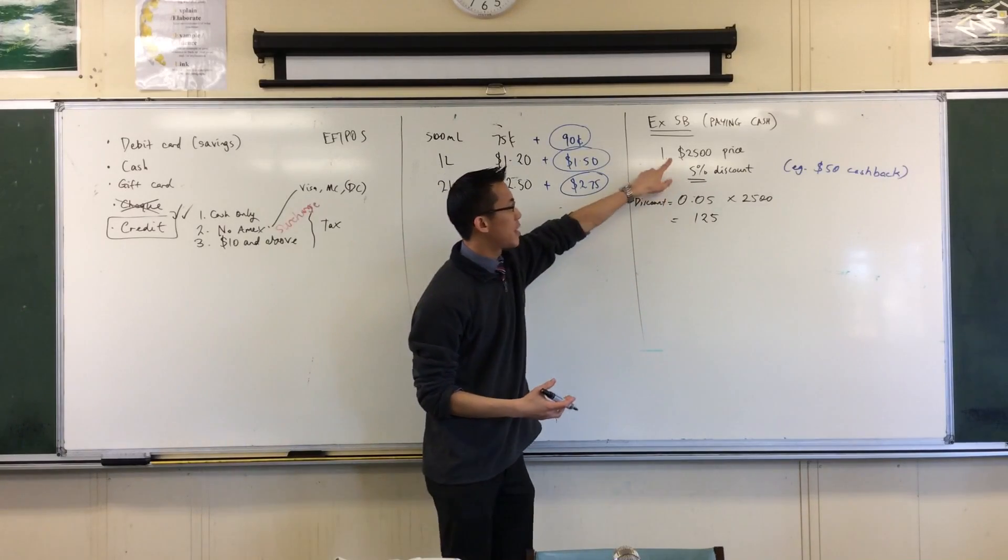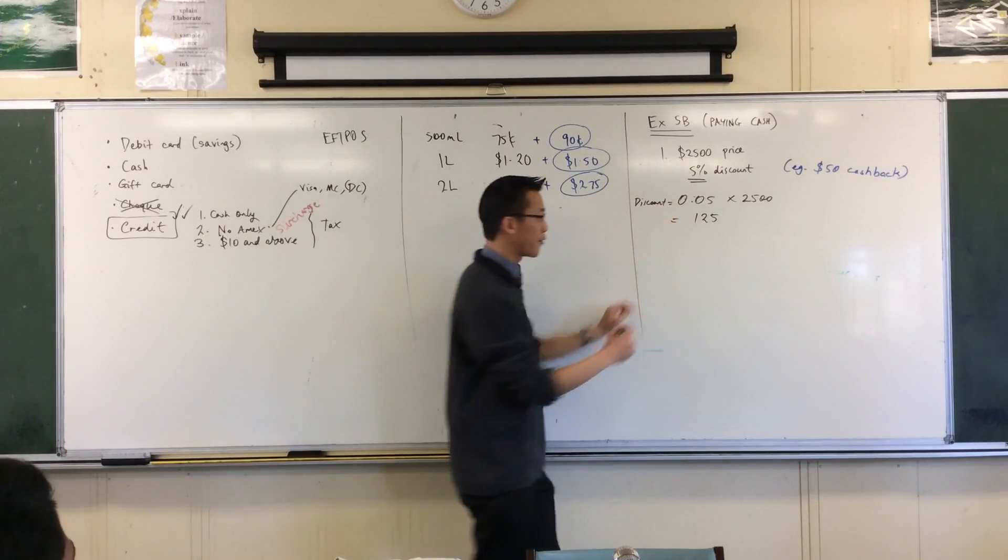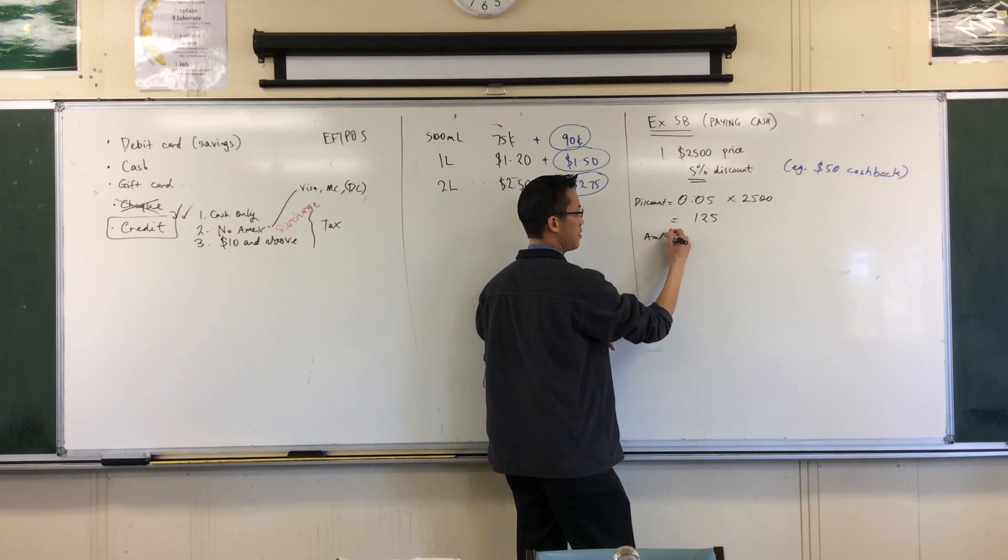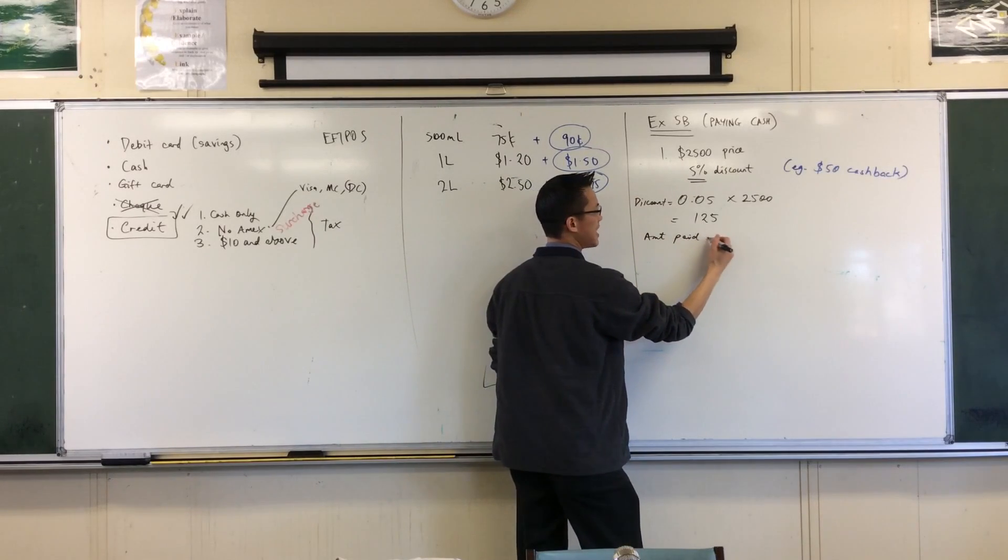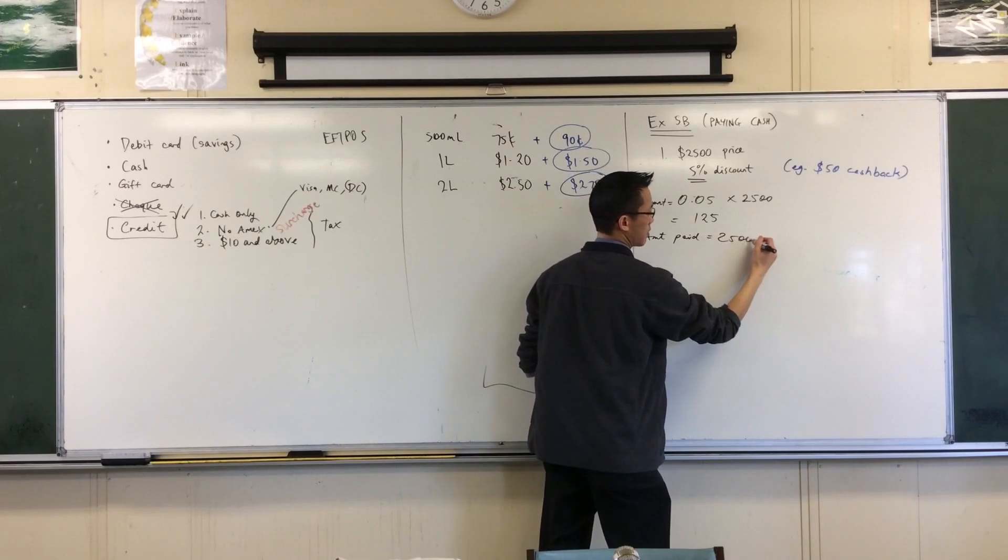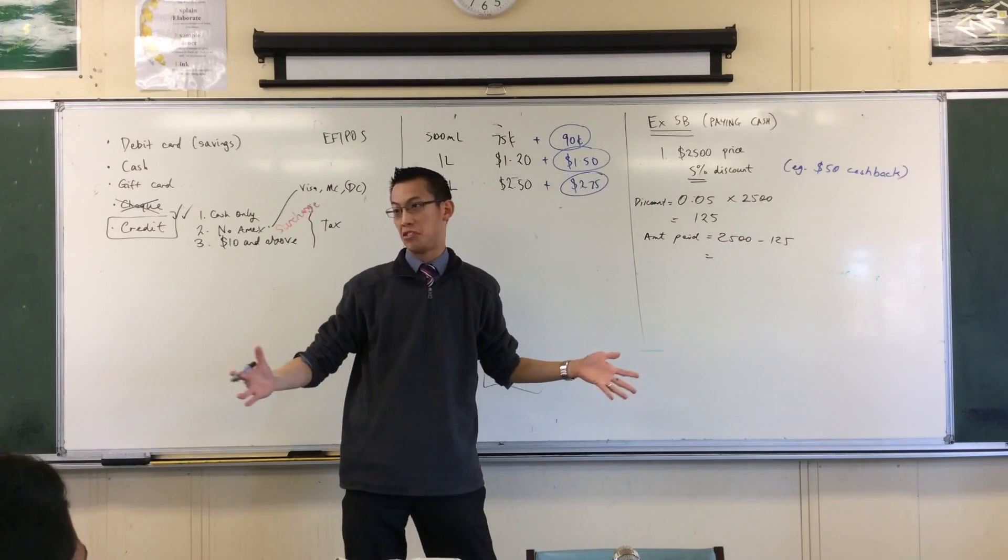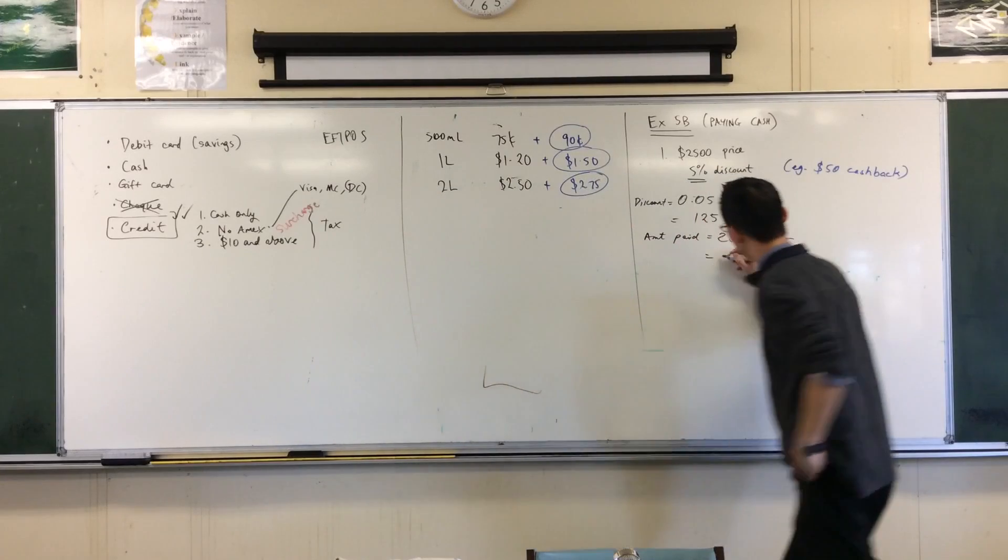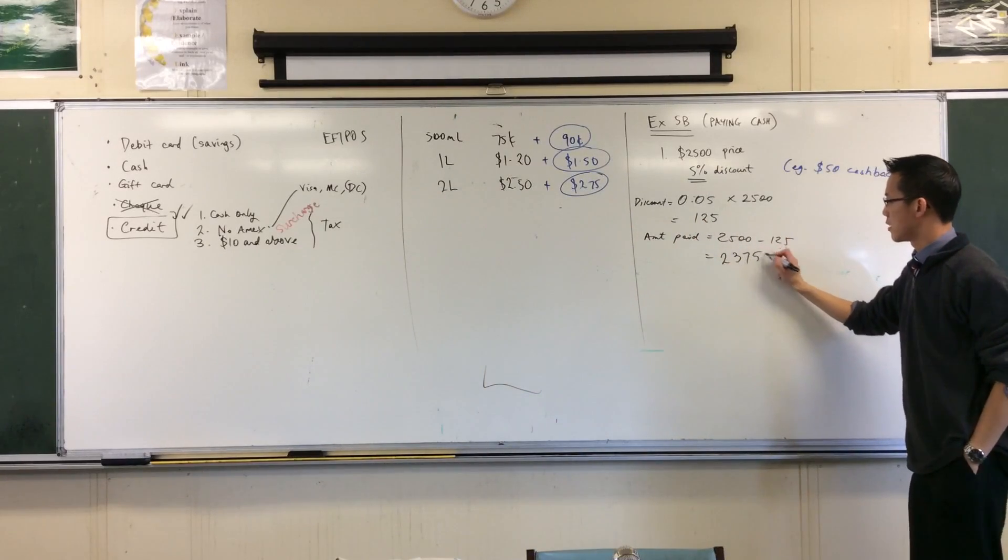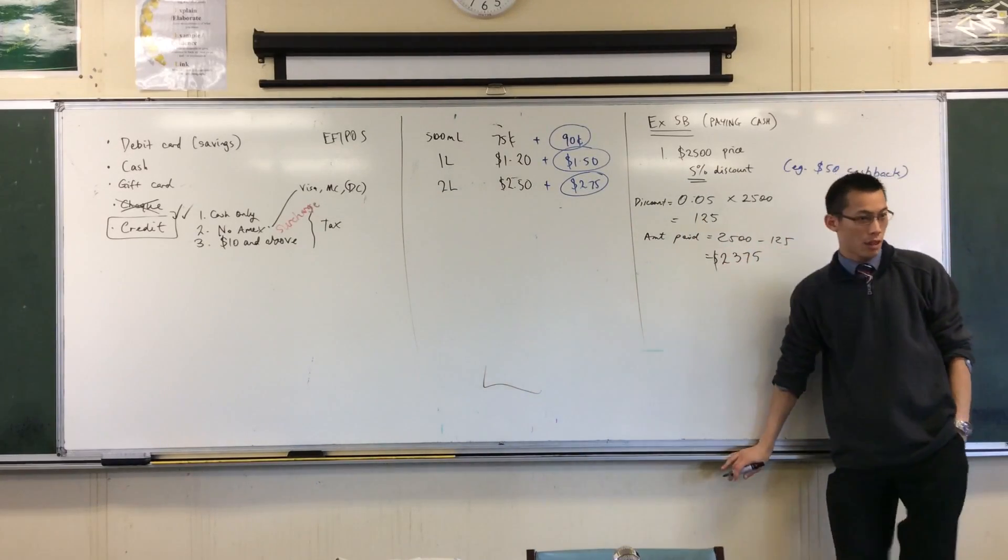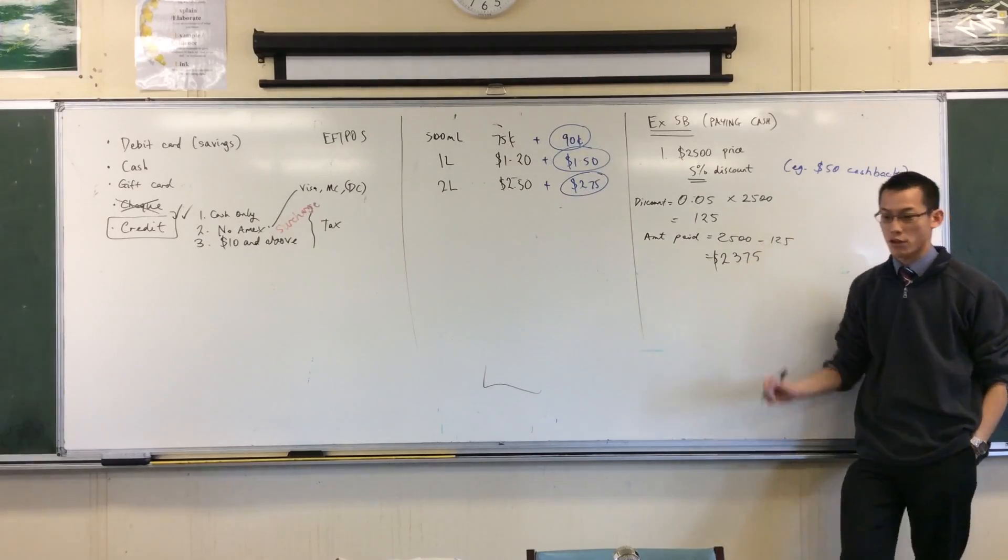So that's how much you're supposed to pay. This is how much off, right? So amount paid is equal to the total, the original, minus the discount. That's all. Simple. So when you subtract it, I think you end up with 2, 3, 7, 5. You should chuck dollars on it. So there's approach one.